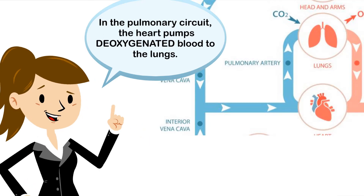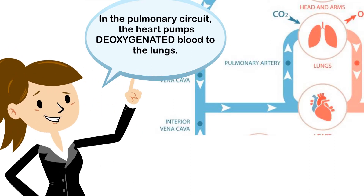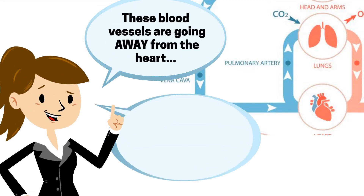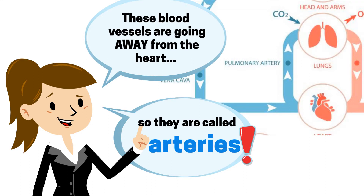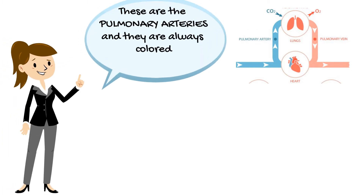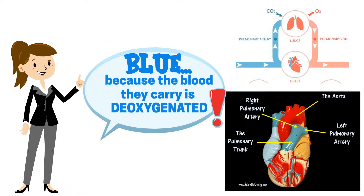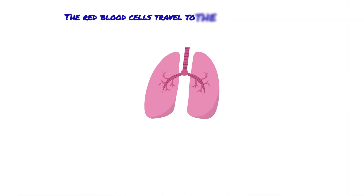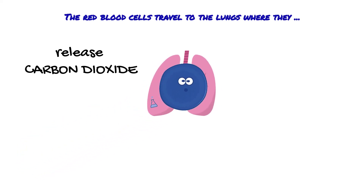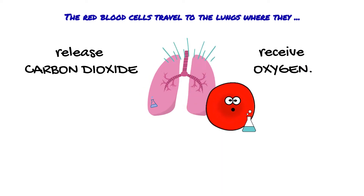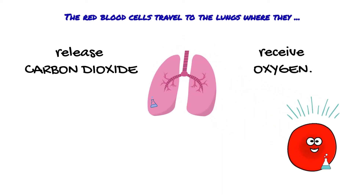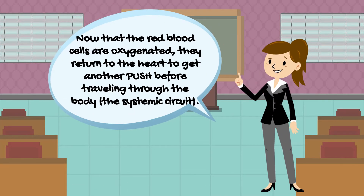In the pulmonary circuit, the heart pumps deoxygenated blood to the lungs. These blood vessels are going away from the heart, so they are called arteries — the pulmonary arteries — and they are always colored blue because the blood they carry is deoxygenated. The red blood cells then travel to the lungs where they release carbon dioxide and receive oxygen.